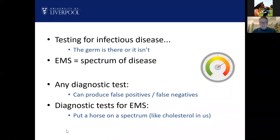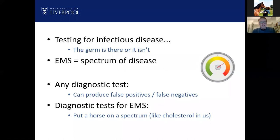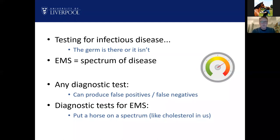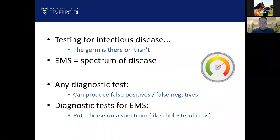With EMS, we're dealing with a spectrum of disease. It's not that one day the horse suddenly gets EMS and didn't have it yesterday — whereas with an infectious disease it can be like that. With EMS it's a gradual onset, a spectrum of disease, and that makes it harder to diagnose definitively and harder to interpret diagnostic tests. As an owner, you want a yes or no answer, but the insulin result is often in the middle — not really high, but at slightly increased risk of laminitis.